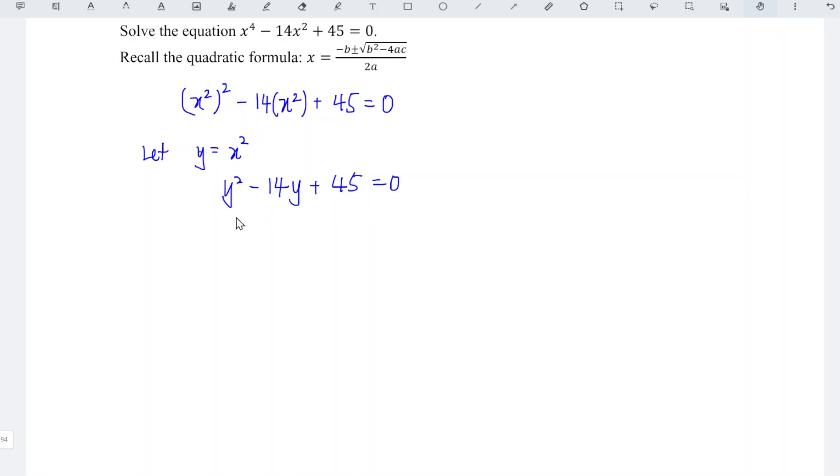From the equation, we can see that a equals 1, b equals negative 14, and c equals 45.